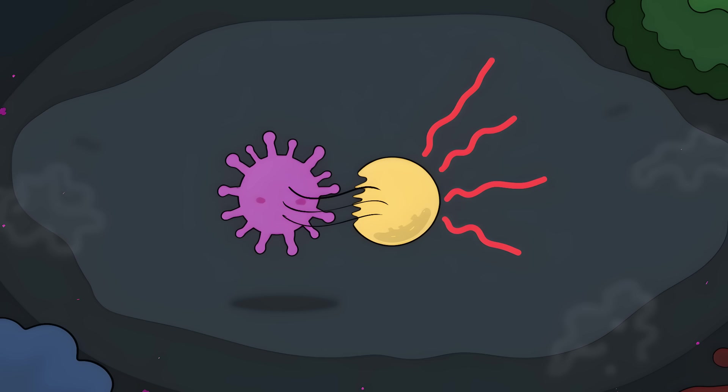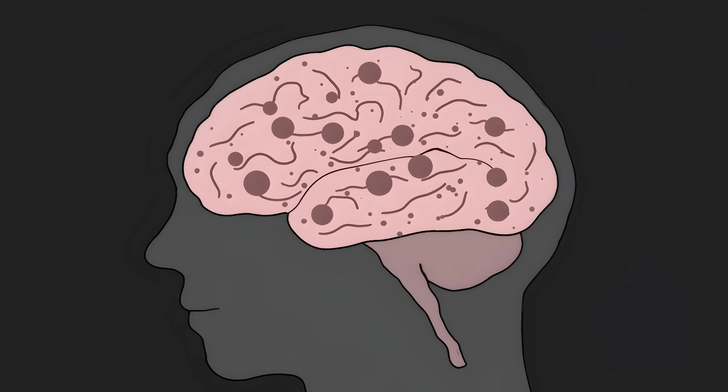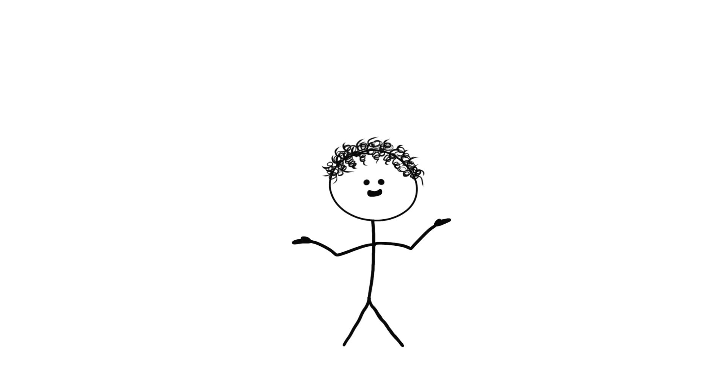When these prions get into your brain, they start folding other proteins the wrong way. Your brain literally starts developing holes until it looks like a sponge. And once it starts, there's no way to stop it.